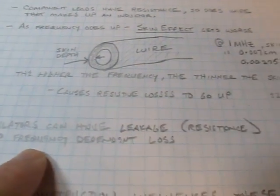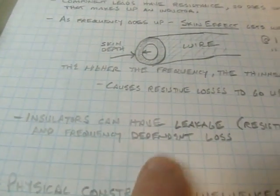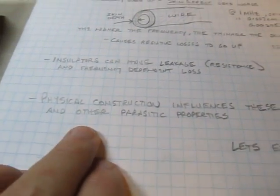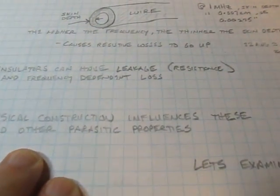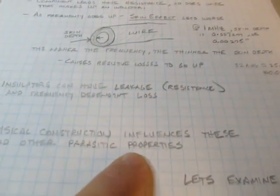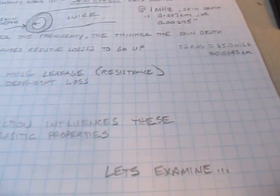Insulators are not perfect. They've got leakage. You can kind of model that like a resistance. They also have some frequency dependent loss. And then, generally the physical construction of inductors and capacitors and other components are going to influence the magnitude of these various types of parasitics, and I've only covered a couple. But let's kind of look at an example of how this can affect and complicate the situation of just creating a simple resonance circuit.